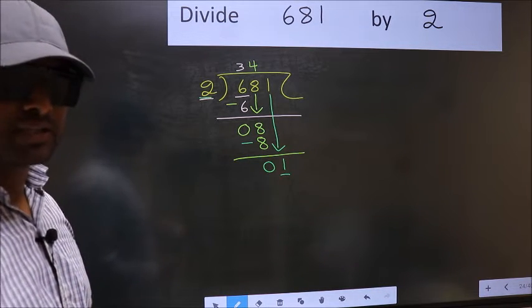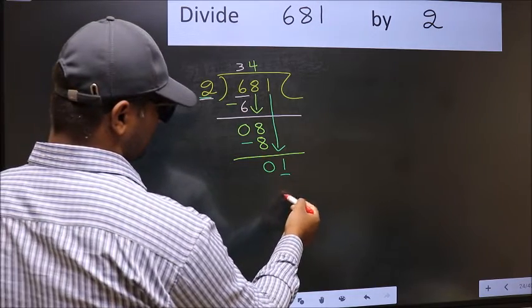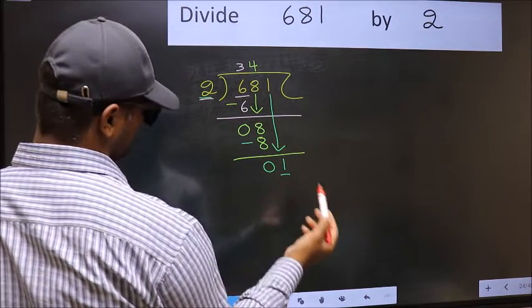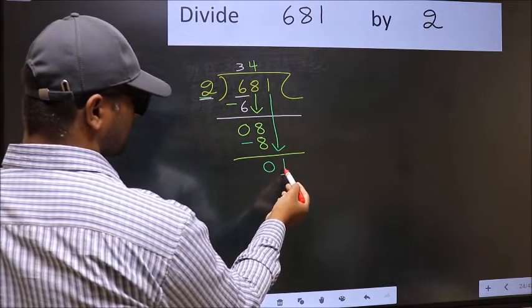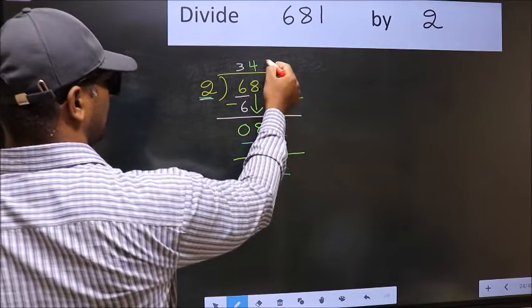Instead, what you should think of is, what number should we write here? If I take 1, I get 2 here. But, 2 is larger than 1. So, what we do is, we take 0.